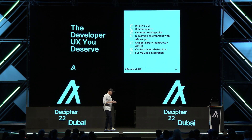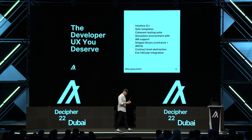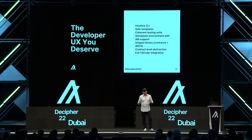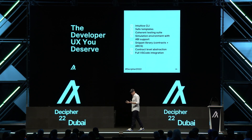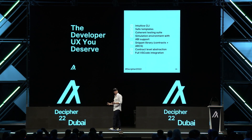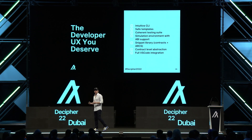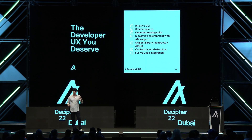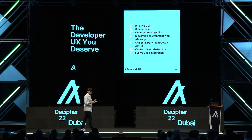But we're not stopping there. The AlgoKit command line interface will also provide you safe templating. When you're initializing your project, you can specify what type of project you're building — similar to what you'd see in mainstream IDEs like Android Studio or Xcode. These templates will be an audited, safe starting point. If you're trying to spin up your latest DAO, you'll have a template. If you're trying to build a safe NFT, you'll have a template to start off.